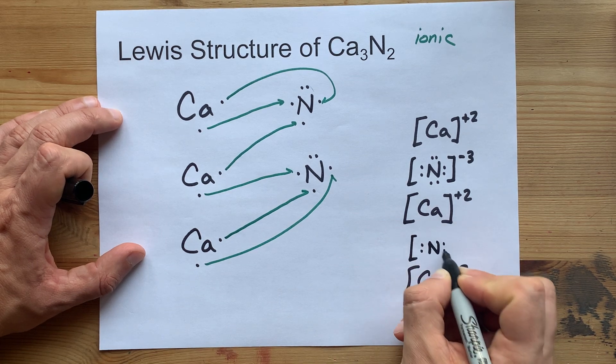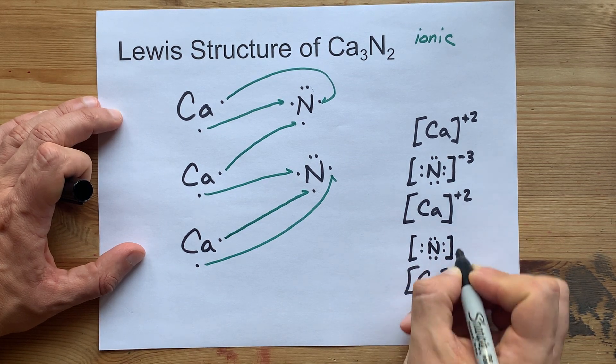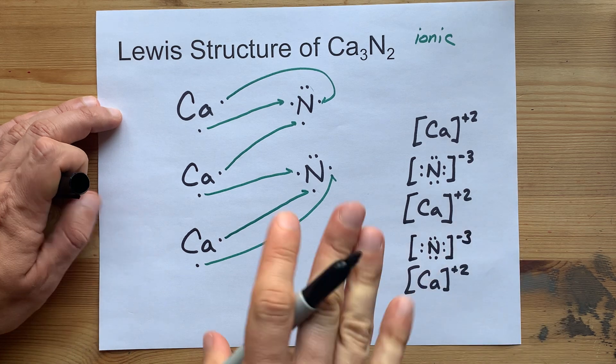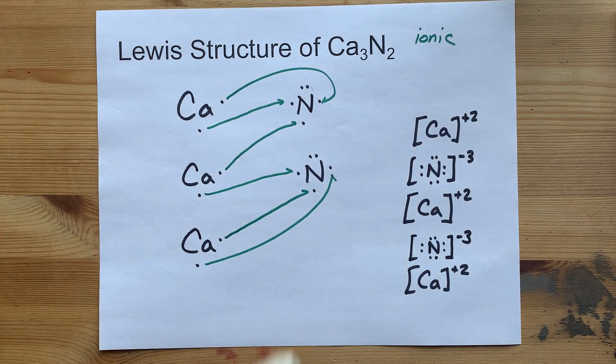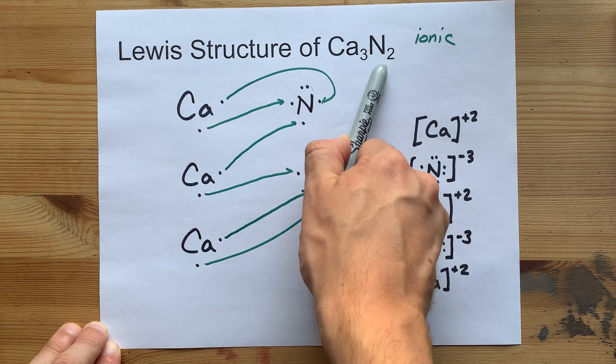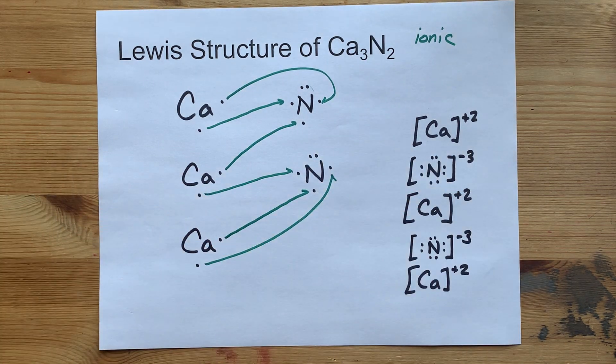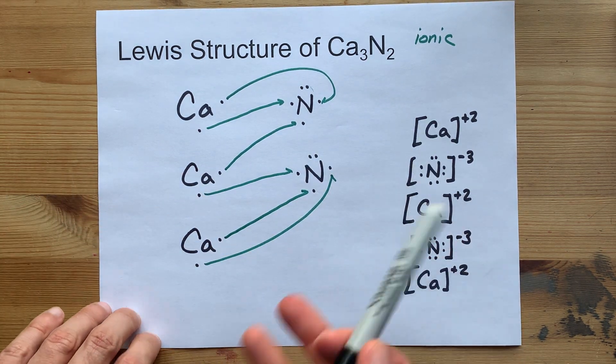And I'm going to have to draw that one twice because there were two of them. That shouldn't have been a surprise. The formula tells you that you need three calciums and two nitrogens to make this all balance. This is your final Lewis structure.